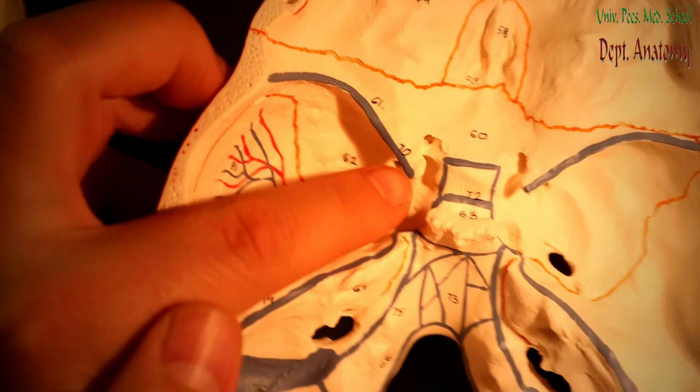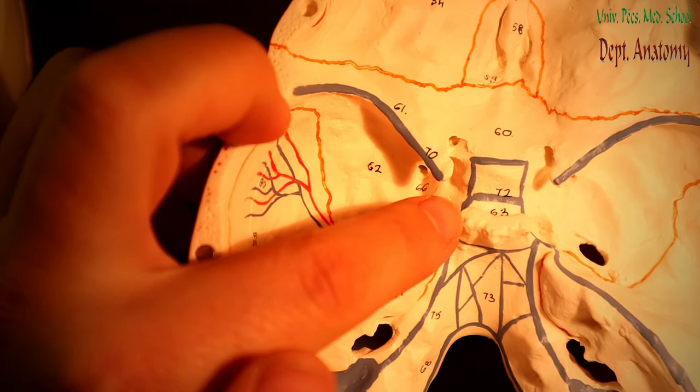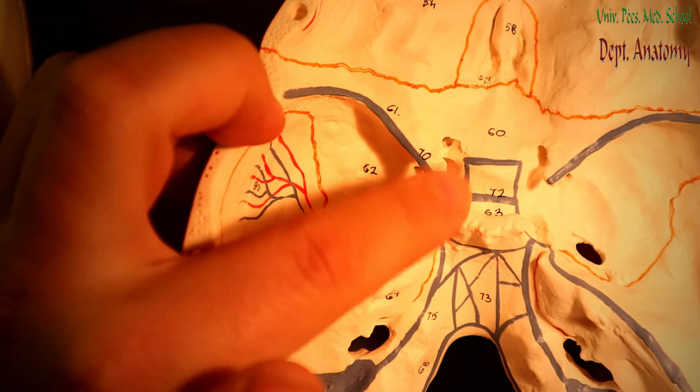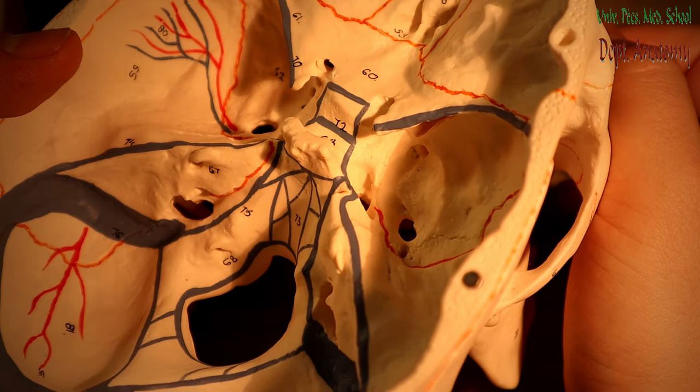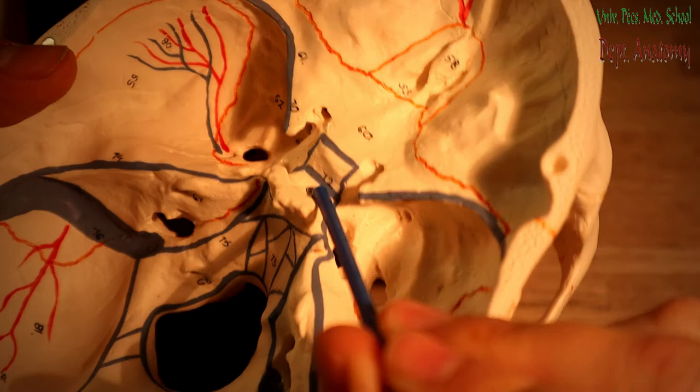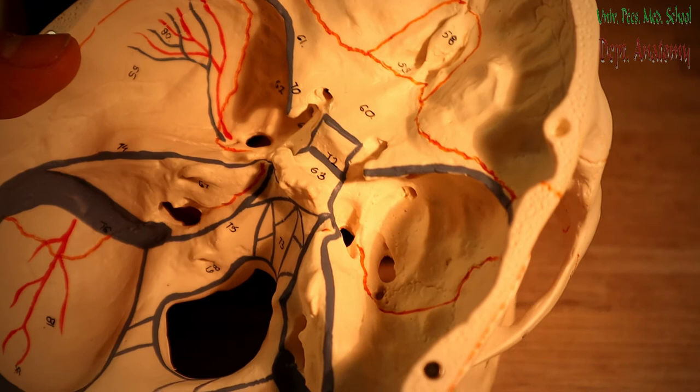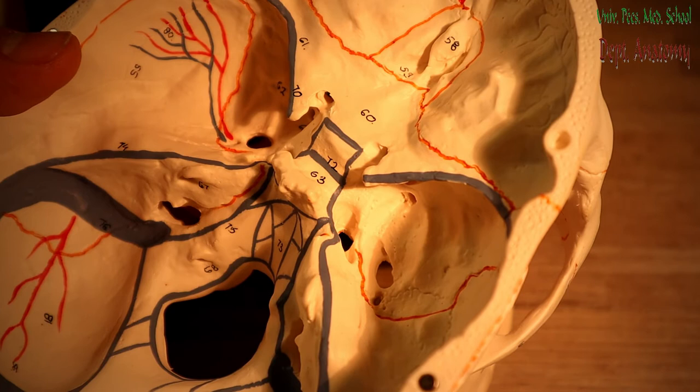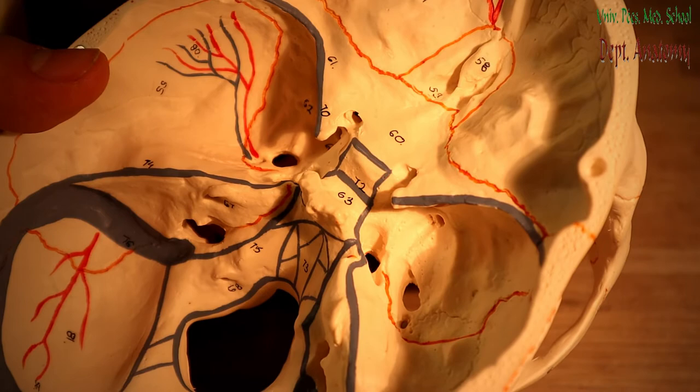I already showed the anterior clinoid process, and on the opposite side you can see the posterior clinoid process. Between these two processes there is a duplication of the dura mater called the diaphragma sellae. Here you can see the hypophysial fossa and the dorsum sellae, which together form the Turkish saddle — the sella turcica — where you find the hypophysis, the pituitary gland.